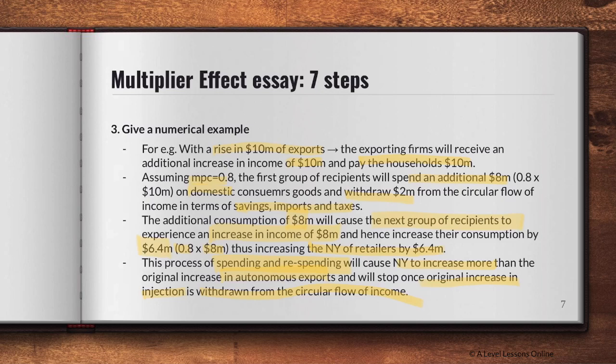This numerical example is straightforward: assume the MPC of the country, multiply it by the increase in income to find what recipients spend on domestic consumer goods. Firms receive that amount and pass it back to their factors of production, and the cycle keeps repeating. The process of spending and re-spending will cause national income to increase more than proportionately compared to the original increase in export earnings, stopping once the original increase in injections equals withdrawals.